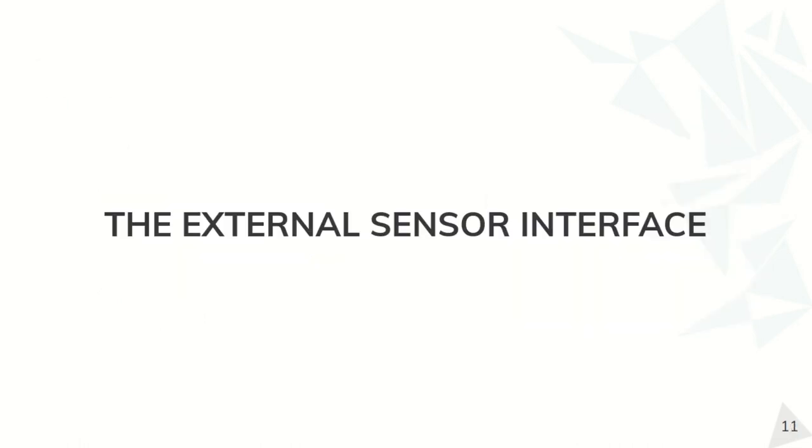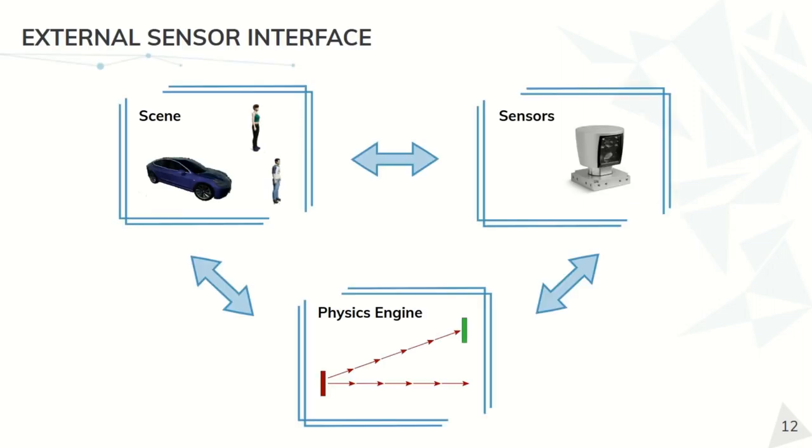Let's talk a bit about the external sensor interface structure. Here we can see a simplified image of the general structure of the ESI, with its main three components. In the scene module, we can manage all the actors in our scene, cars, pedestrians, buildings, and the relations between them.